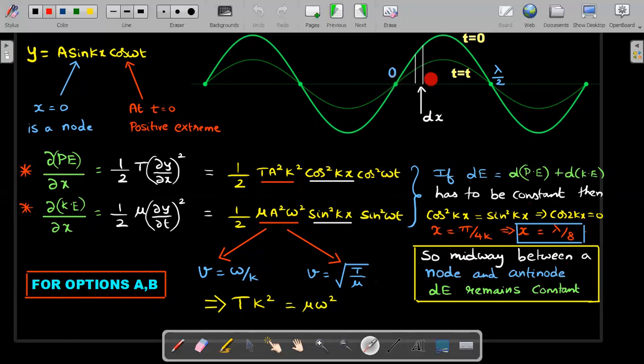This is a very interesting result: midway between node and antinode. This is node, this is antinode, distance is lambda by four. Therefore at lambda by eight, dE remains constant within that window. Not all windows can have that. There's a common misconception that within every dx the energy remains constant in a standing wave—it's not true.